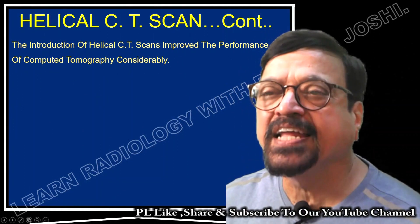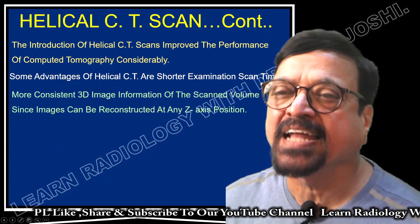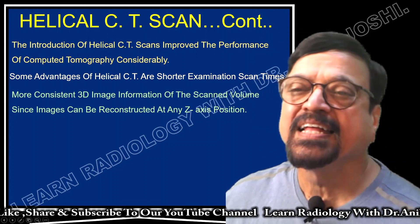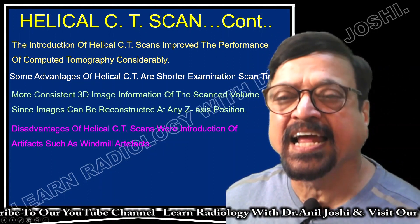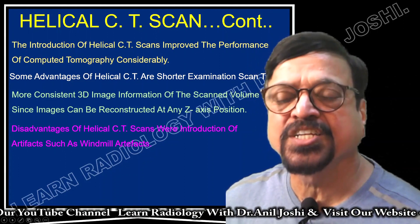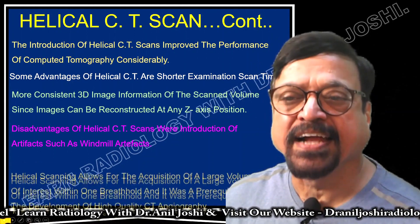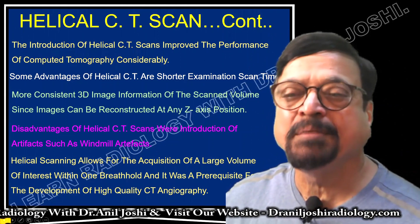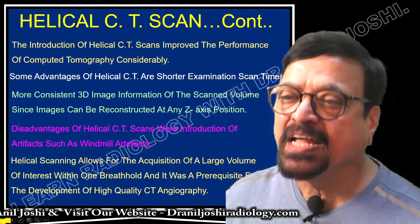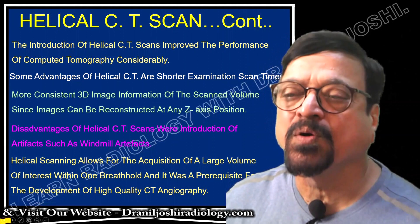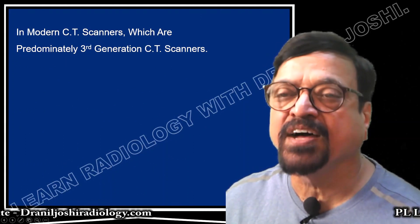The introduction of helical CT scan considerably improved the performance of computed tomography. Advantages include shorter examination scan time and more consistent CT images since images can be reconstructed at any axis — x, y, z — making coronal, axial, and even angular reconstructions possible. One drawback of helical CT scans is the introduction of artifacts such as windmill artifacts — a cost paid for the gains. Helical scanning allows acquisition of a large volume within one breath hold and was a prerequisite for high quality CT angiography, where fast scanning is needed as contrast dye moves quickly through arteries.